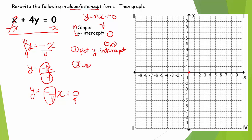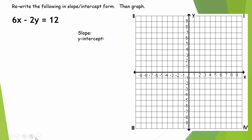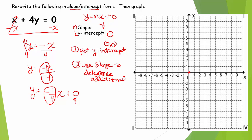Next step: use your slope to determine additional points on the line. If the slope is negative 1 fourth, the top number tells us whether we go up or down. If the slope is negative, we go down 1 from the y-intercept, and the bottom number always tells us go to the right 4. So from your y-intercept, you go down 1, to the right 4, and continue that pattern — though then we'd be off our graph.